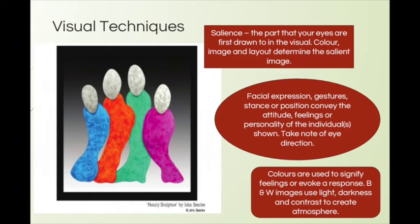What I wanted to do very briefly is look at some visual techniques, because particularly next year when you do Distinctively Visual, your related text can be an artwork — it can be a photo, a painting like an Australian painting, or an image from a movie. So we need to know when thinking about how writers write visually, we need to be able to relate that to visual techniques.